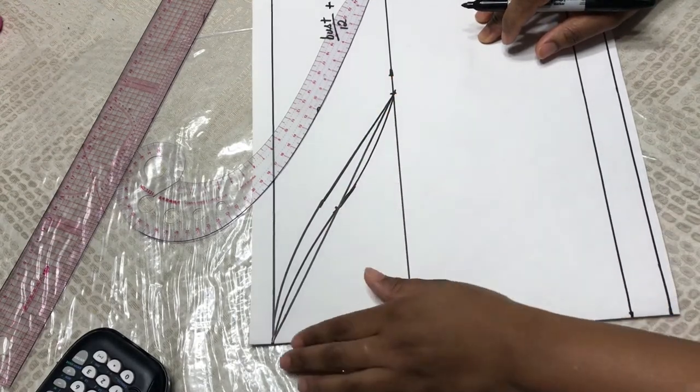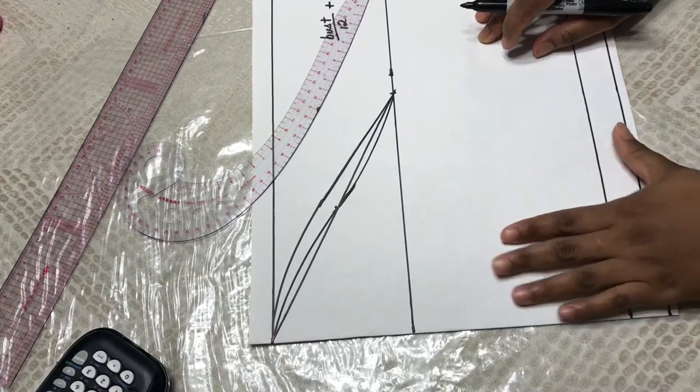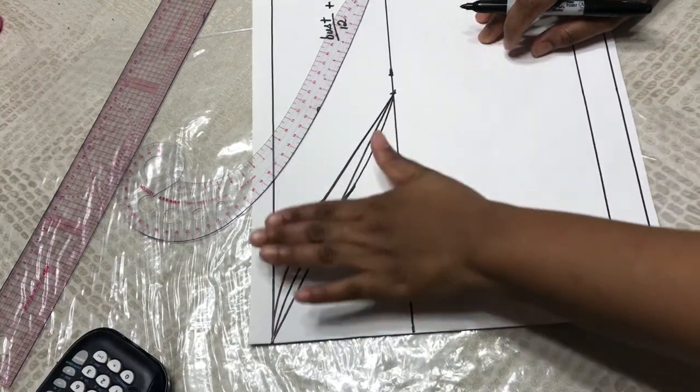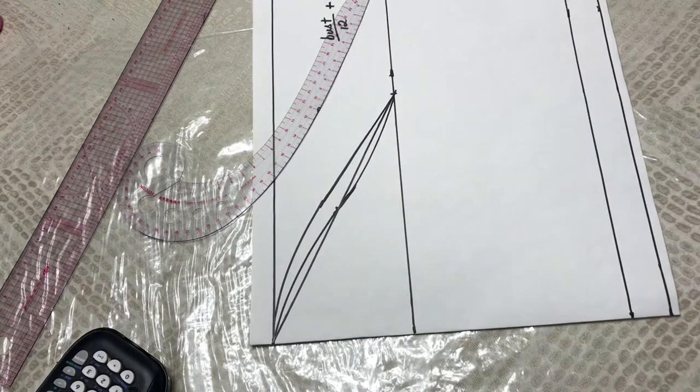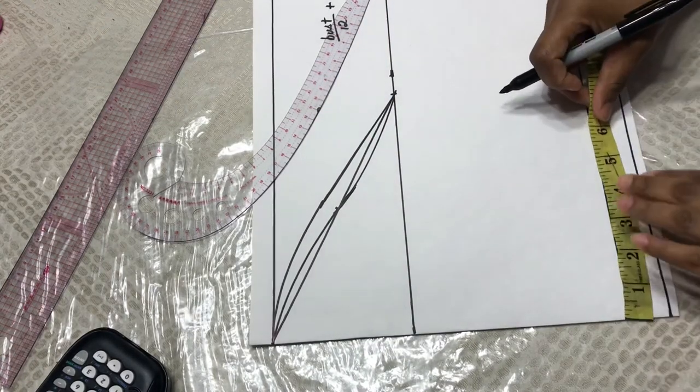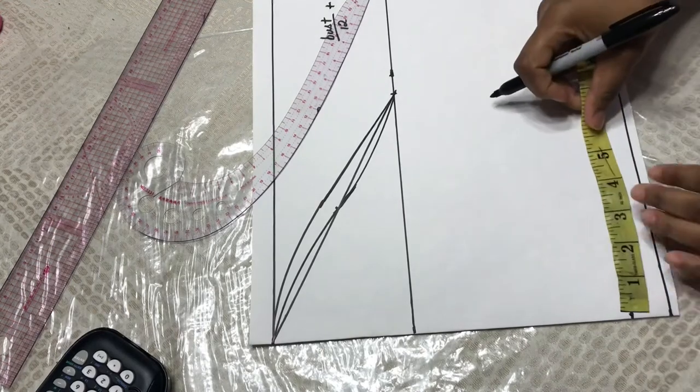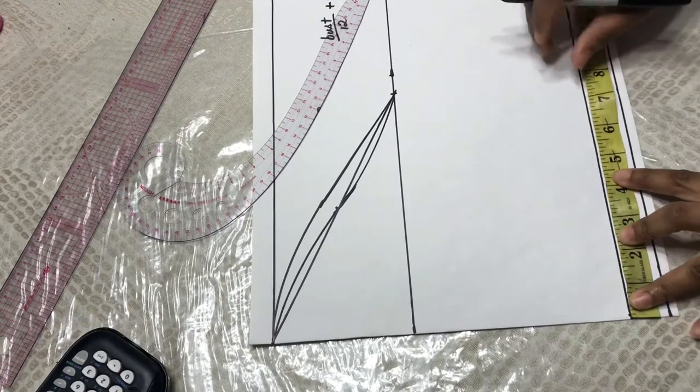Remember we said that the front armhole is deeper than the back, and that is that. So now you're going to measure your sleeve opening. This is how big your arm is. Mine is 12 inches, so I'm going to divide that by two.